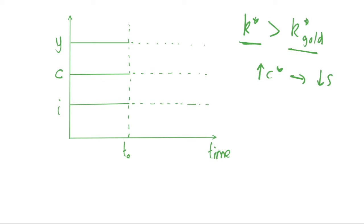Let's look at a diagram to understand this a bit better. We have output per capita, consumption per capita, and investment per capita on the y-axis, and we're looking at how these variables evolve over time on the x-axis. We're initially at this steady state k*, and so our variables on the y-axis are all constant, as shown by these horizontal lines.